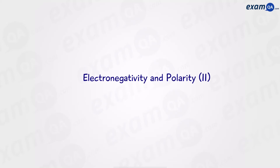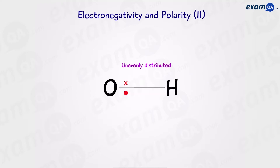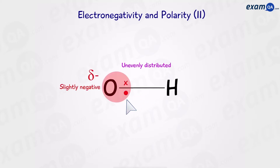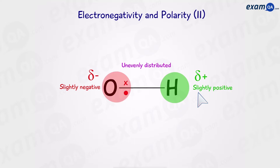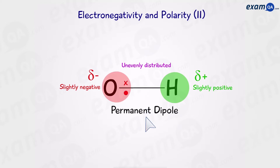Electronegativity and polarity part 2: polarity of molecules. In the previous part, we saw that when you have a covalent bond and the electrons are unevenly distributed, we have one side that is slightly negative and the other side is slightly positive. So we have two poles across this bond. We can say that this bond has a permanent dipole, which is another way of saying that we have a polar bond.